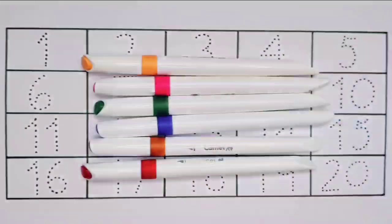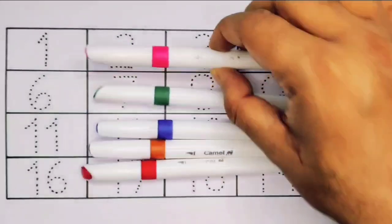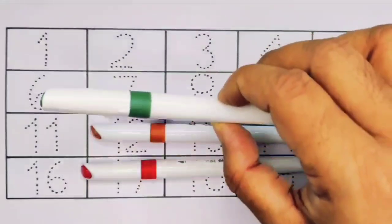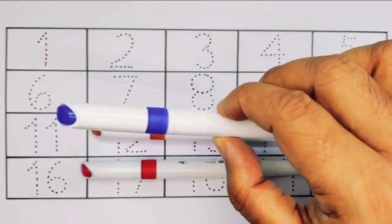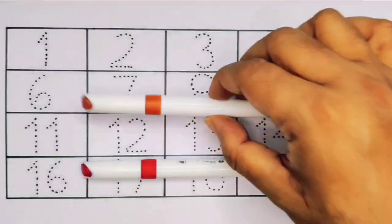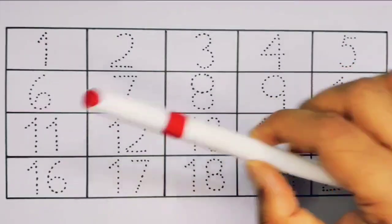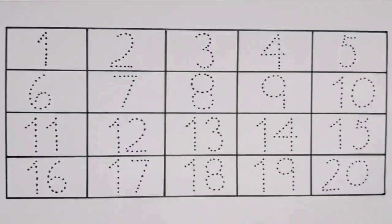Black color, orange color, pink color, green color, blue color, brown color, and red color. Now let's learn the numbers counting 1 to 20.